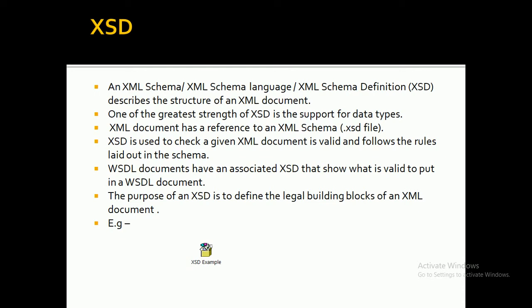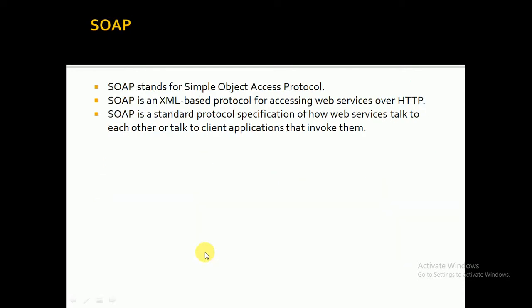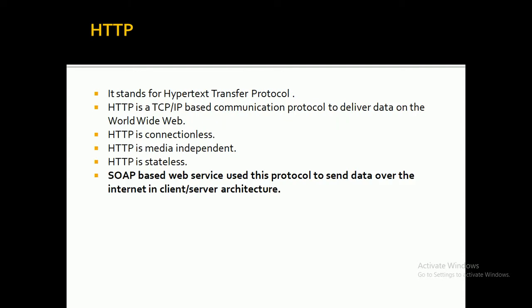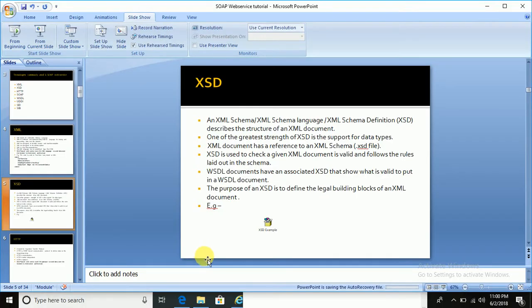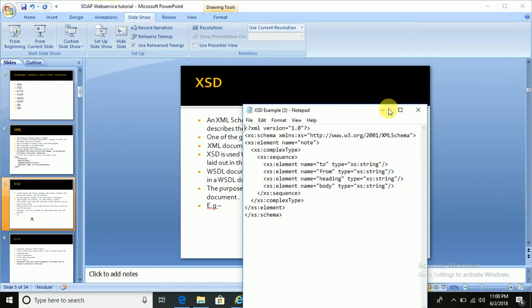A digital document is also an XML document, so it also has an associated XSD that defines what is valid to put in the XML document. The purpose of an XSD file is to define the legal building blocks of an XML document. So the XSD file defines the structure of an XML document.